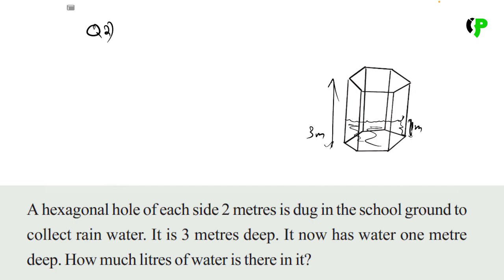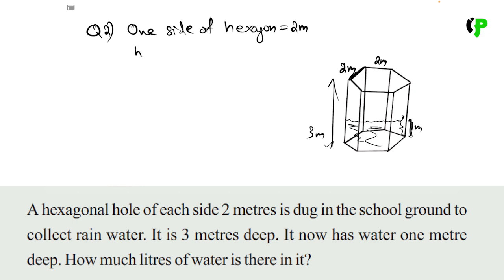One side of the hexagon is equal to 2 meters. It is a regular hexagon. The height of the water is 1 meter.